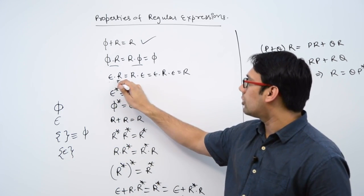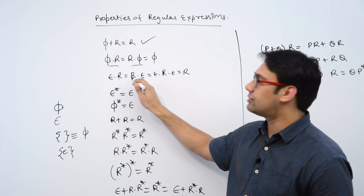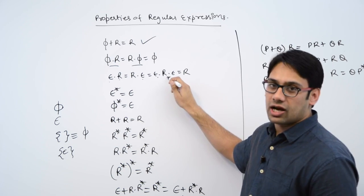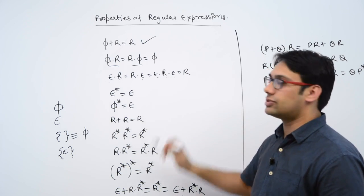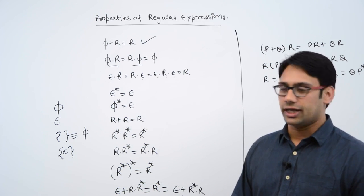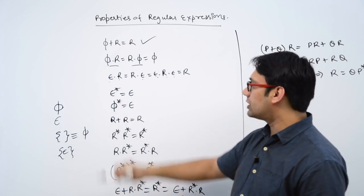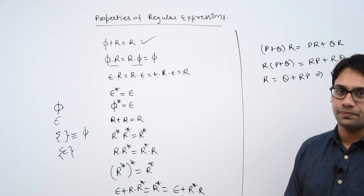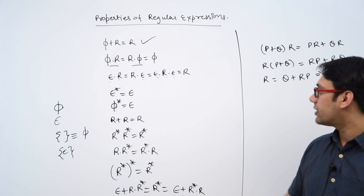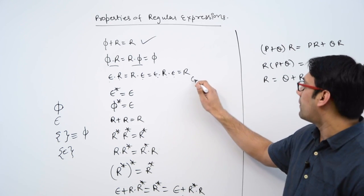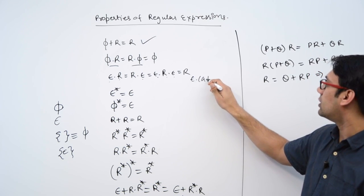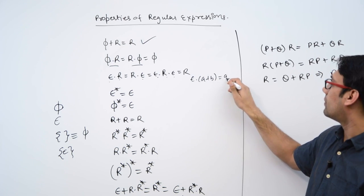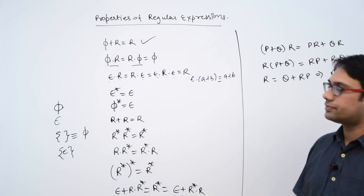Now, ε·r = r·ε = ε·r·ε = r, where ε is a string of length 0 and r represents a regular expression. For example, if we have ε·(a+b), it is actually equivalent to (a+b) only.